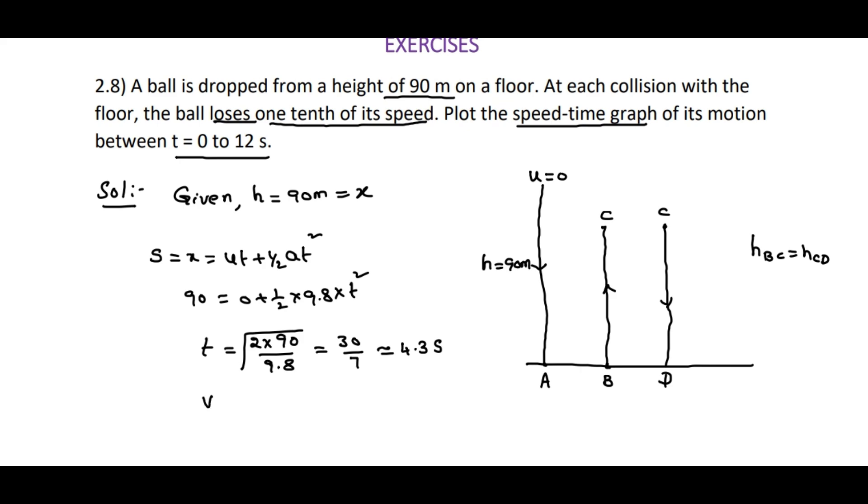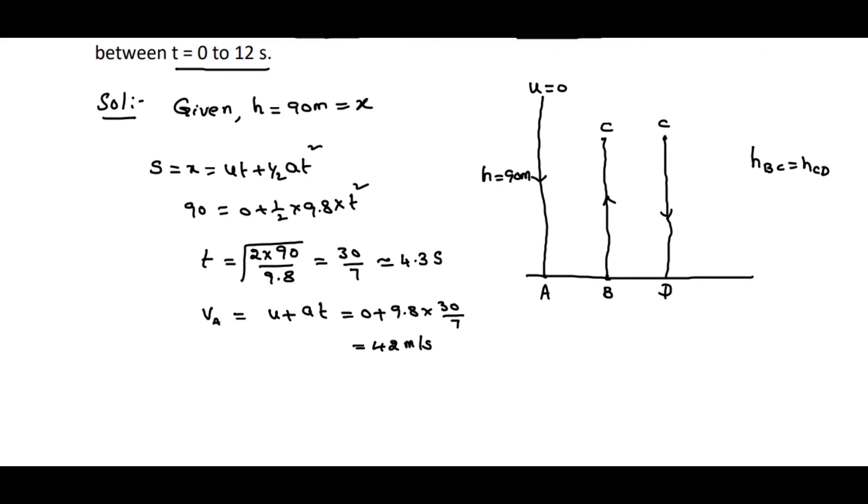So what is the velocity while reaching point A? V equals u plus at. From this, 0 plus g, which is 9.8 times 30 divided by 7. Its value is nearly 42 meters per second. The speed while reaching point A is 42.